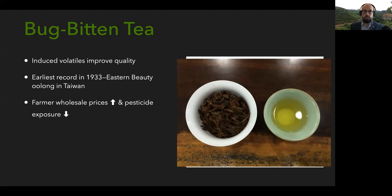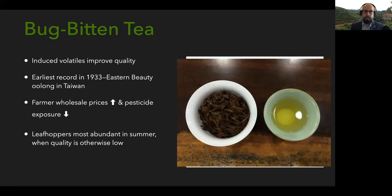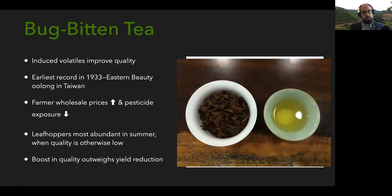This is a cool strategy because it allows farmers to increase their wholesale prices and produce higher quality tea just by essentially not spraying insecticides. Leafhoppers are around because they're a common tea pest. Tea quality is generally lower in the summer, which is when leafhoppers are around, so tea farmers have the potential to boost quality at this time of year. Even though leafhoppers reduce yield, that boost in quality makes it a viable strategy.